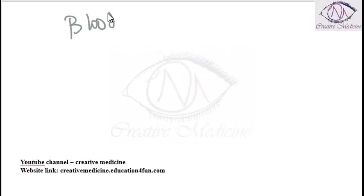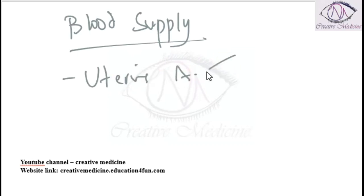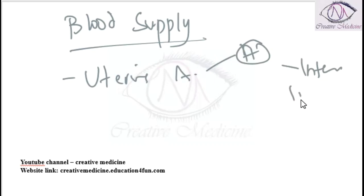Uterine artery is the main source of blood supply of uterus. Uterine artery is a branch of anterior division of internal iliac artery. Ovarian artery also supplies the uterus.